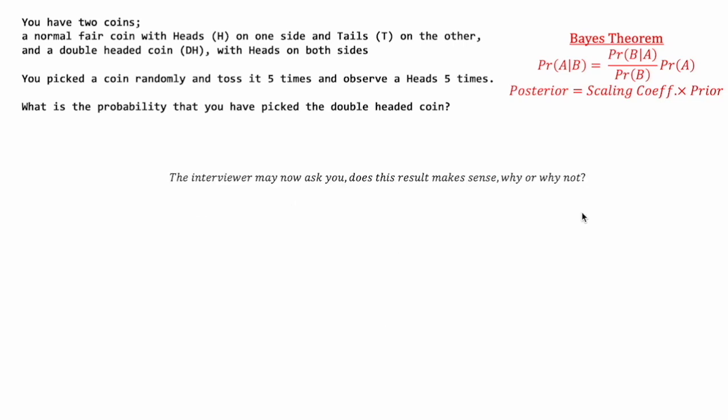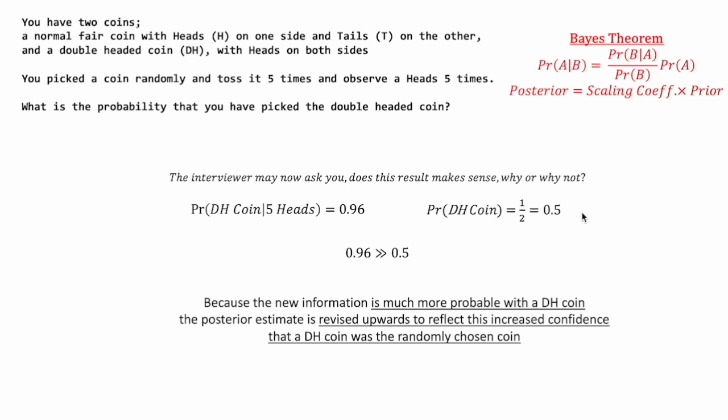At this point, the interviewer may ask: does this set of results make sense, and why or why not? Starting from our prior estimate of getting a double-headed coin being 0.5, by incorporating this new information using Bayes' theorem, we have obtained a posterior estimate of 0.96. This represents a substantial increase from prior to posterior. The results make sense simply because the new information — flipping five heads — is much more probable with a double-headed coin, since it's guaranteed, compared to a normal fair coin. Hence the posterior estimate is revised upwards to reflect increased confidence that the double-headed coin was the one randomly chosen.